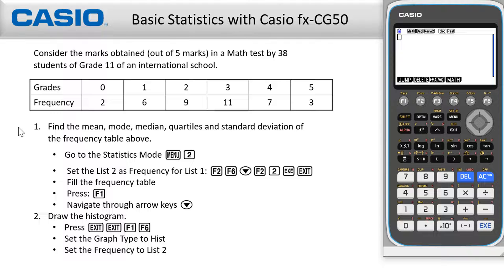It's called a frequency table, including 38 students. This table shows that two students scored zero on the test, six students scored one on the test, and so on.